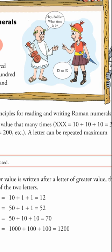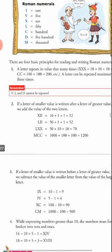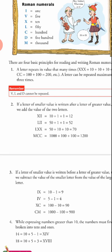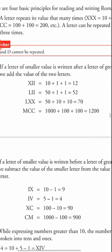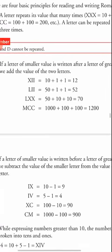The man asks the soldier: 'Hey soldier, what time is it?' The soldier replies in Roman numerals. To read that reply, we need to know Roman numerals and the rules for writing them. There are only seven alphabets in Roman numerals, and there are four basic principles for reading and writing them.